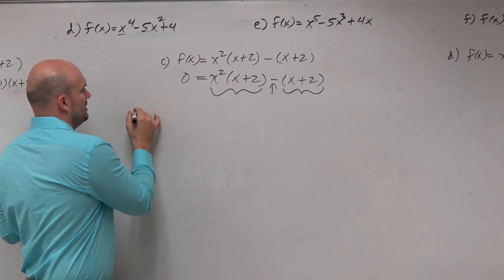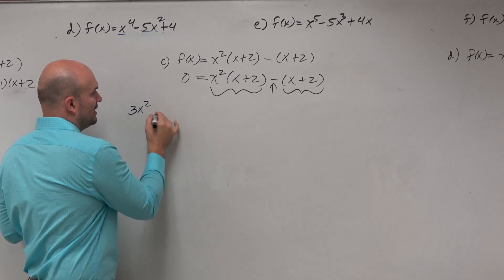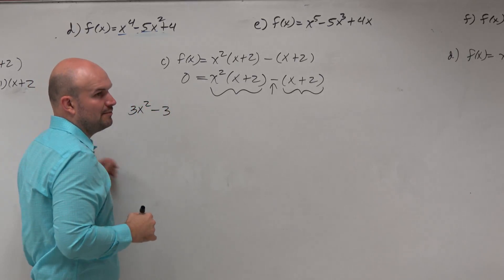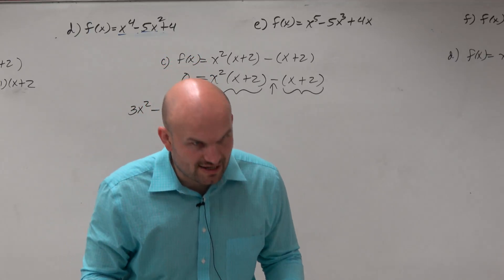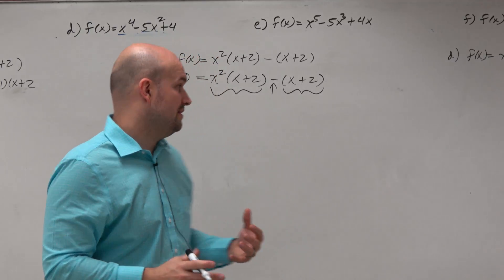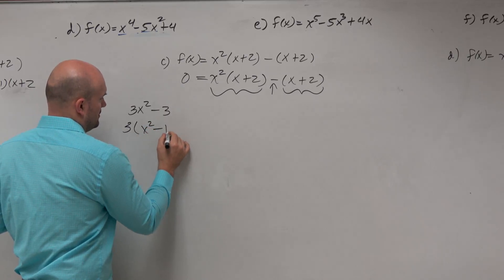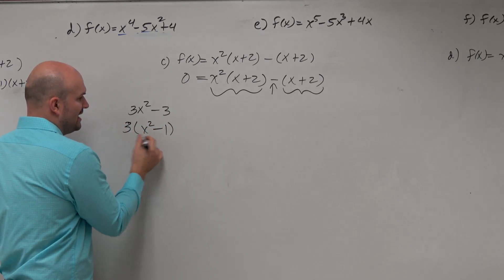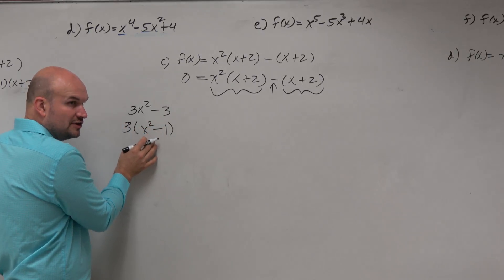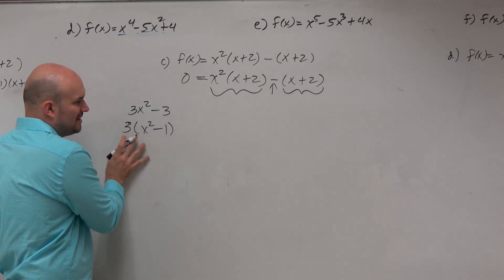So if I had something like 3x squared minus 3, and we said, hey, factor that. And you'd say, well, they have a 3 in common, right? And then, obviously, we could factor this down further, right? But for right now, I'm not going to go to that step.